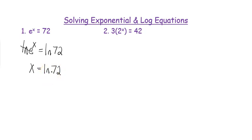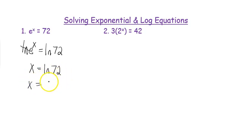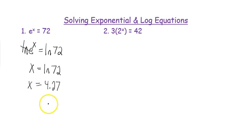There are some cases where in a multiple choice situation you see it written like that, and then there are other cases where you type it into your calculator and get a decimal — in this case that would be 4.27. If you need to practice typing that in, pause and make sure you get that same answer.